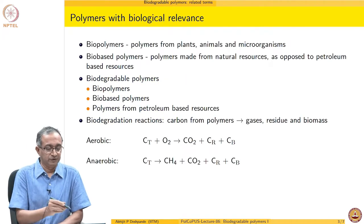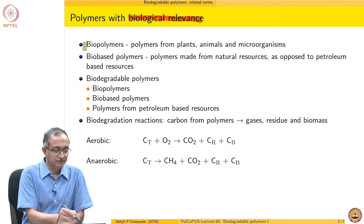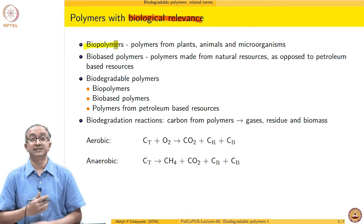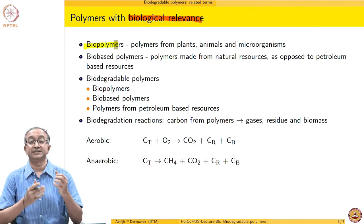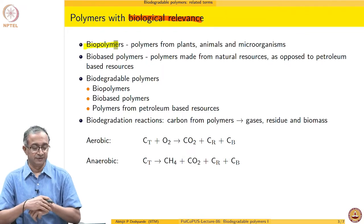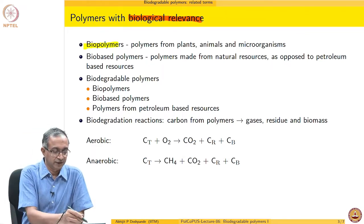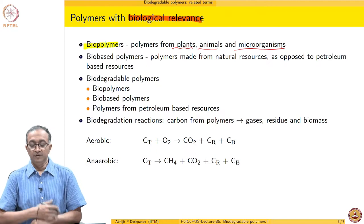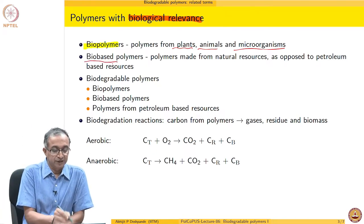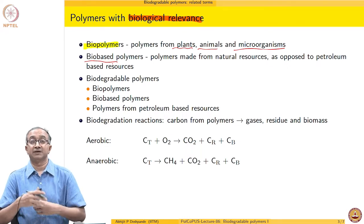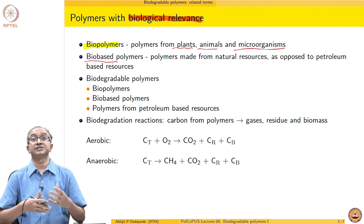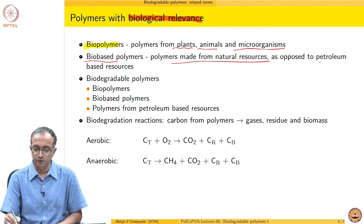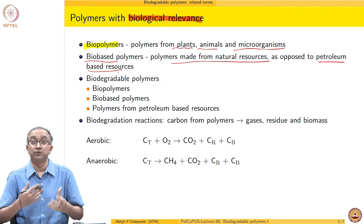If we look at polymers with biological relevance, we have already seen the set of polymers called biopolymers or biomacromolecules. These are quite often either nucleic acids, proteins, or polysaccharides — macromolecules originating from plants, animals, or microorganisms. We also talk in terms of bio-based polymers, where transformations or polymerization reactions are taking place, but the original resource is a natural resource as opposed to a petroleum-based resource. These are called bio-based polymers.